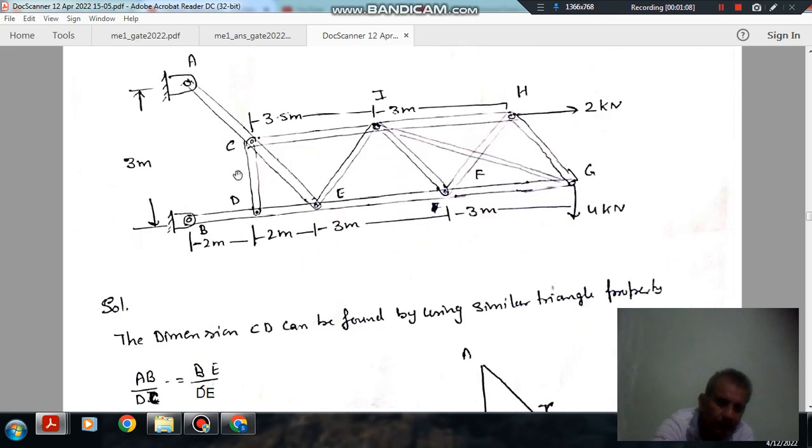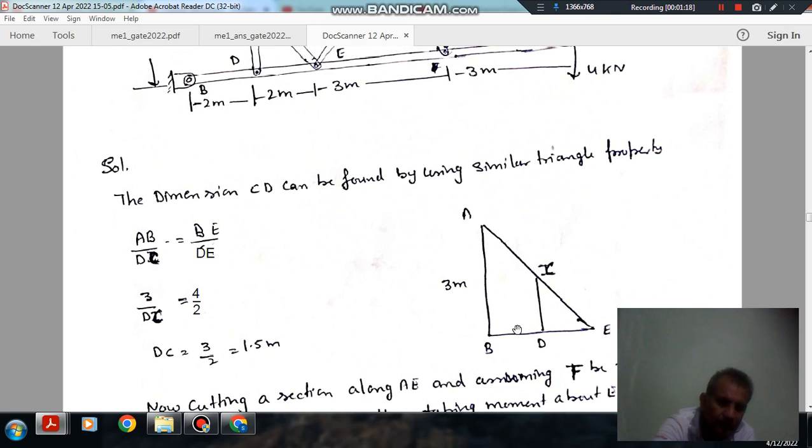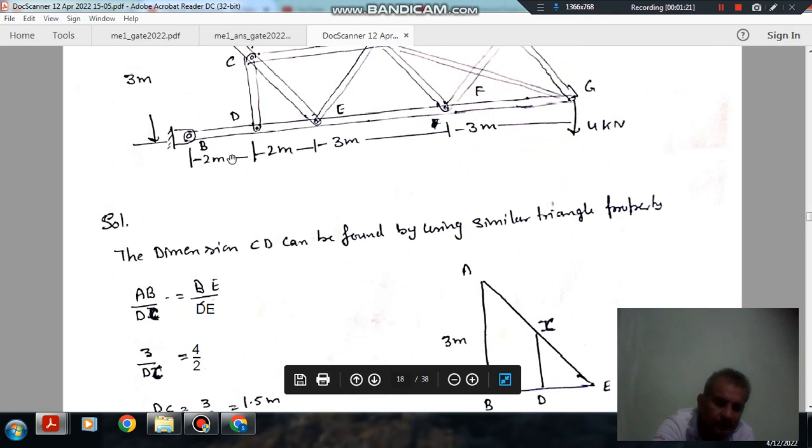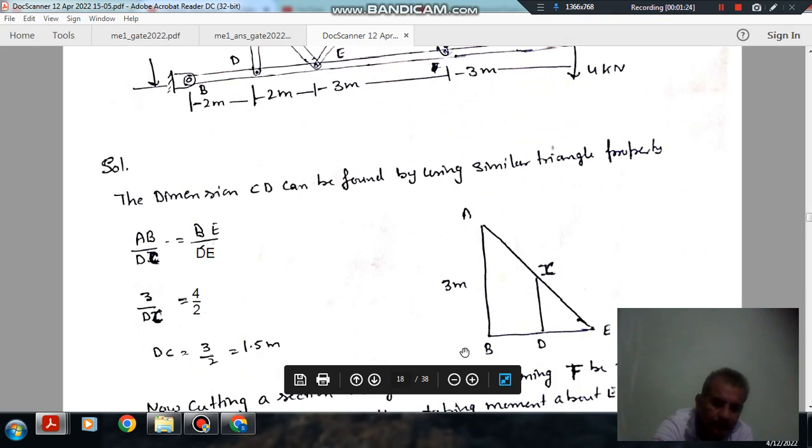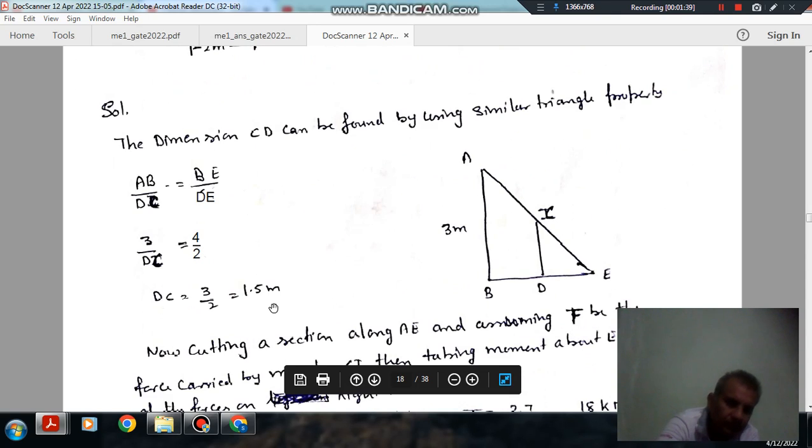It is not given, but this can be done by considering triangles ABE and CDE as similar triangles. So AB is 3 meters and this is 4 meters DE. We can apply that AB by CD, or DC, is equal to BE by DE. From these two triangles, we can find out DC as 3/2 times 1.5, which is okay.